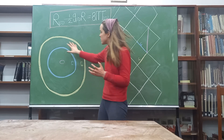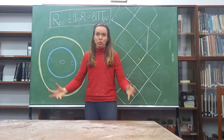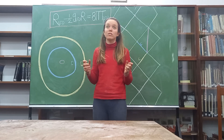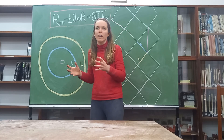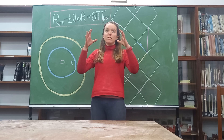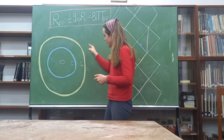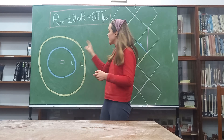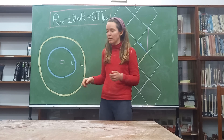Now this causes the space around the singularity to become so curved — that is equivalent to saying that gravity is so strong — that we get these horizons of no return. You see the yellow shell and the blue shell. They are called the outer and the inner horizon.